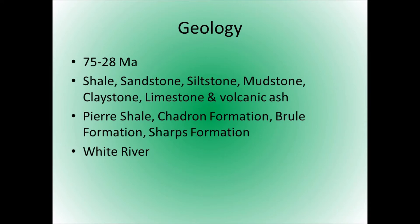The geology of Badlands National Park spans rocks from 75 to 28 million years ago, consisting of many layers including shale, sandstone, siltstone, mudstone, claystone, limestone, and volcanic ash. The volcanic ash layer is relatively thin, and much of it came from the supervolcano also known as Yellowstone — which, around 35 to 25 million years ago, was located toward Utah rather than Wyoming.